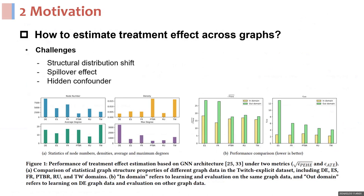But what if all data comes from multiple domains, each with its unique graph structures? This structural distribution shift can significantly impact the performance of traditional methods. Our work addresses this gap by proposing a new method for cross-graph causal effects estimation.